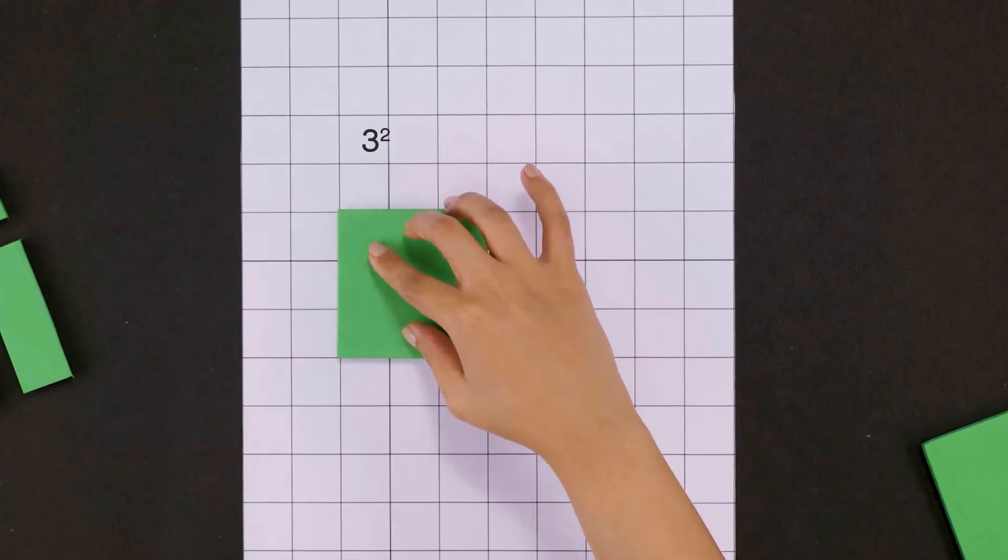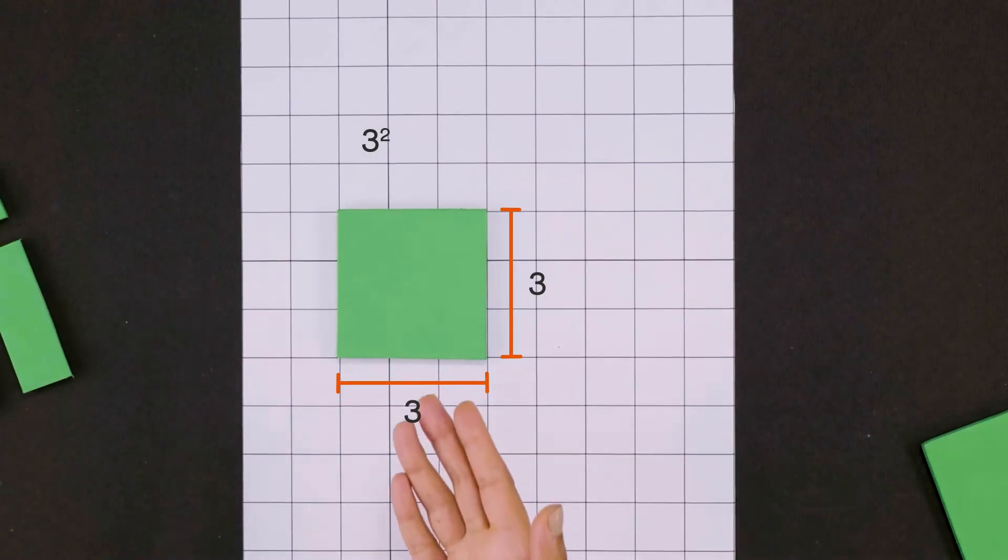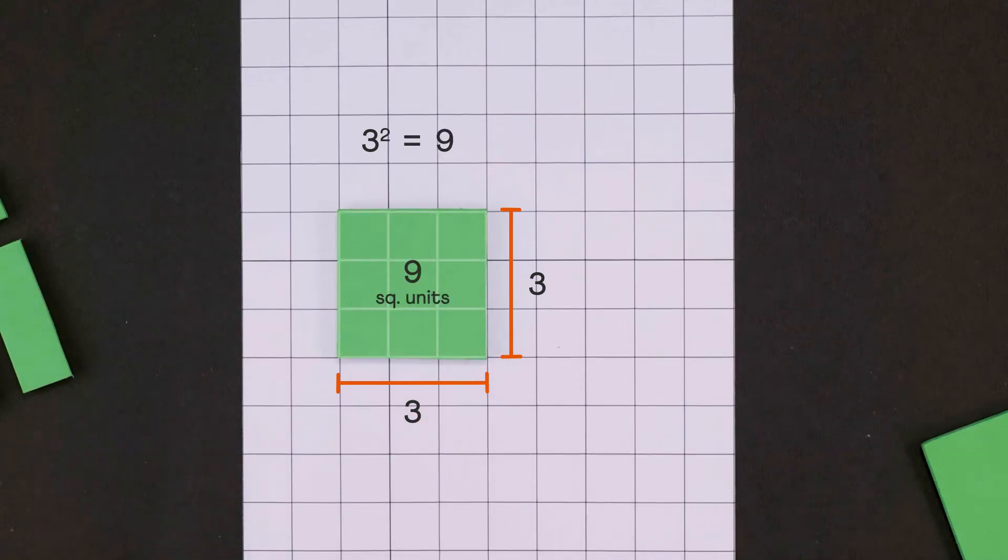But where does this formula come from? Let's see. Thinking geometrically, the square of any number, say 3 squared, is the area of a square with side 3. The area of this square is 9 square units and that equals 3 squared.